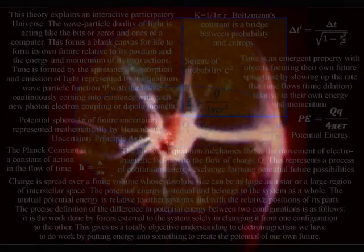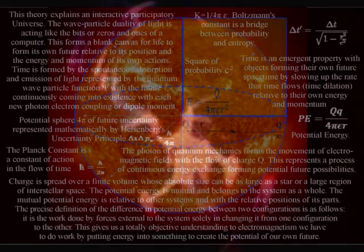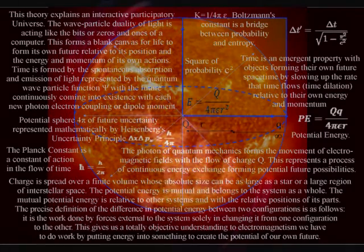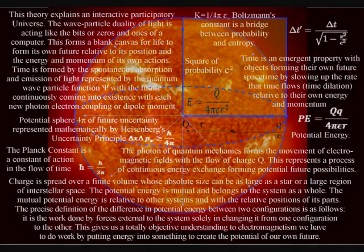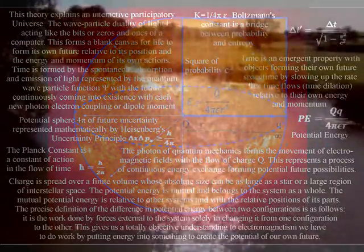Plasma is based on the same universal process of energy exchange. The only reason why it seems so different is because the electrons are not bound to the atoms in plasma. Because of this the process unfolds over an extremely large area with charge being spread over a finite volume, whose absolute size can be as large as a star or a large region of interstellar space. In our everyday life with the electron bound to the atoms, the area of energy exchange is much smaller.